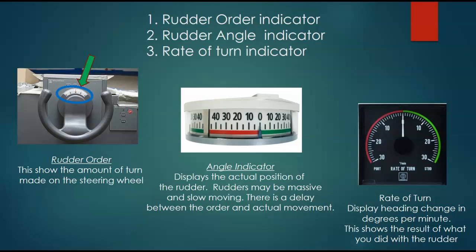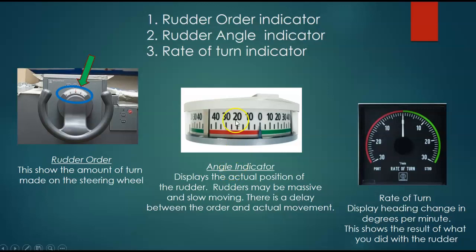So there might be a little bit of delay. If you were given the order of right 10 degrees rudder, you would repeat that order and set this indicator to right 10. Then a few seconds later — four or five seconds — we'd start to see the rudder angle indicator, number two up there, start to move over to that mark, indicating to you that the rudder had actually moved.